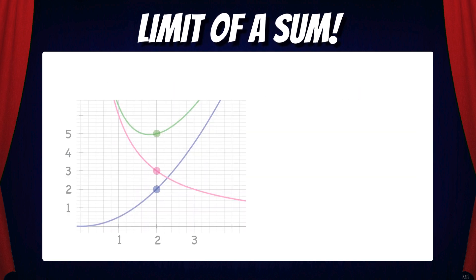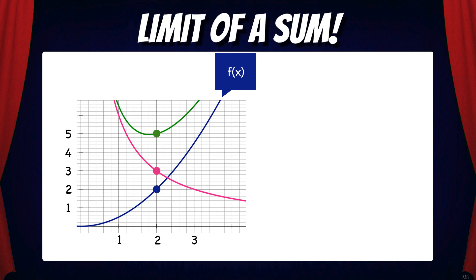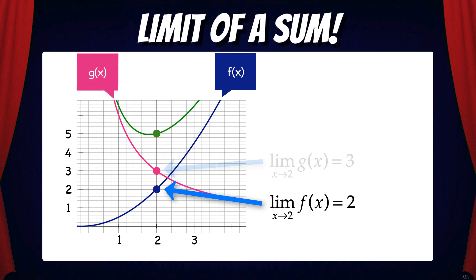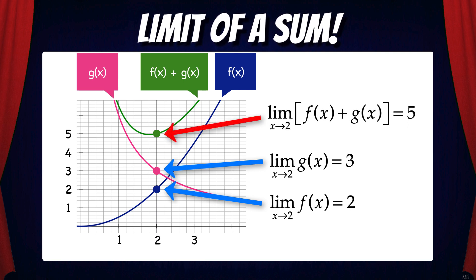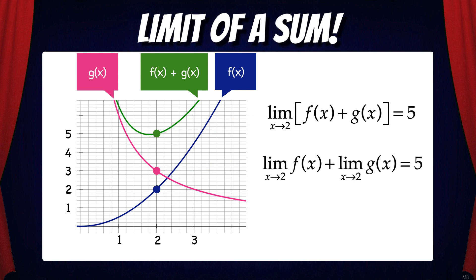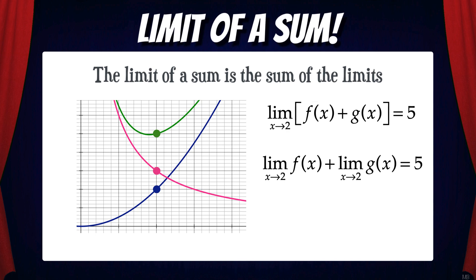Let's take a minute and explore this graphically. Suppose f is the blue function. We can see that the limit of f as x approaches 2 equals 2. g is the pink function and the limit of g as x approaches 2 equals 3. Now the green function is f plus g, and we can see that the limit of f plus g as x approaches 2 equals 5. The limit of f as x approaches 2 and the limit of g as x approaches 2 summed together separately equals 5 as well. So this confirms the limit law graphically: the limit of f plus g equals the limit of f plus the limit of g.